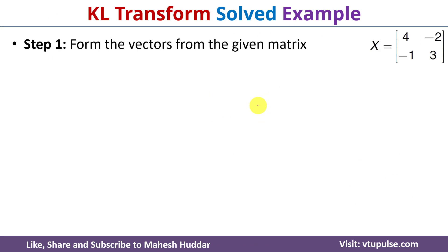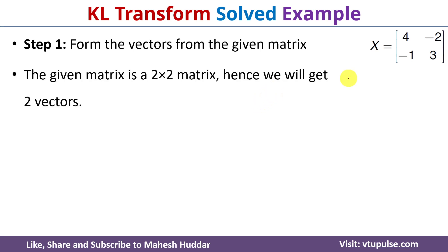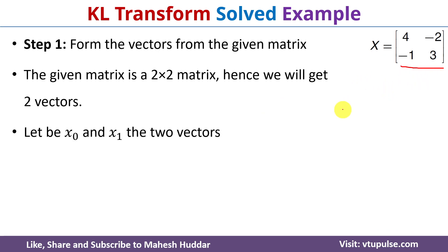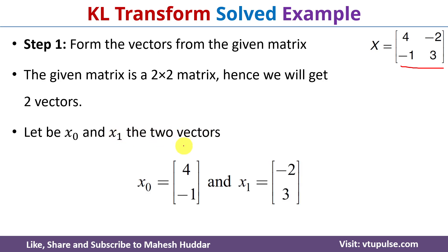The first step of KL transform is to form the vectors from the given matrix. The given matrix is a 2x2 matrix, hence we will get 2 vectors. Let x0 and x1 be the two vectors, where x0 is equal to [4, -1] and x1 is equal to [-2, 3].